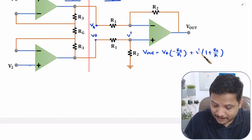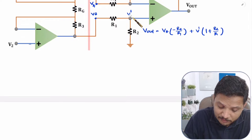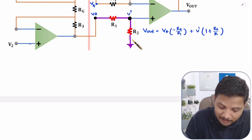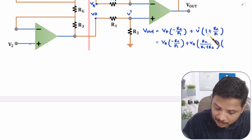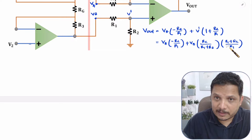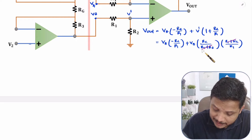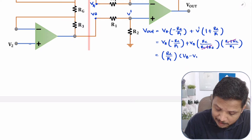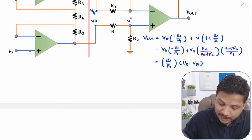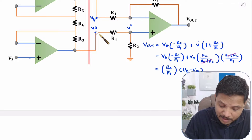Now we need to find V dash. V dash occurs because of VB. By the potential divider rule, V dash equals VB multiplied by R2 divided by R1 plus R2. Substituting and simplifying by taking R1 common, the term R1 plus R2 over R1 cancels with the denominator. Taking R2 over R1 as common factor, Vout simplifies to R2 over R1 multiplied by VB minus VA. So Vout equals (R2/R1) × (VB − VA).